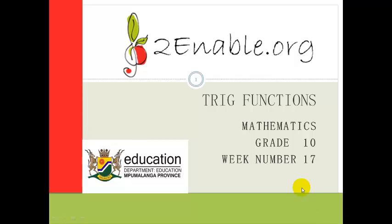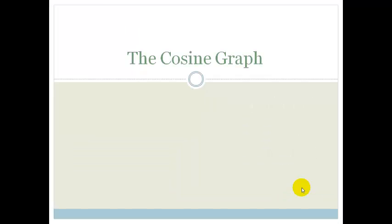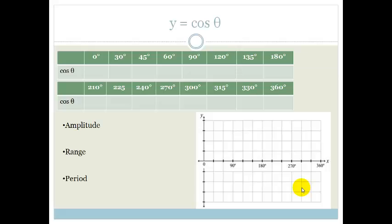Good day, Great Tens. Welcome to our second lesson in trig functions. Today's lesson, we're going to be looking at the cosine graph. We're going to do exactly the same as we did with the sine graph — we're going to be plotting points. I know, tedious, but it's the best way for you to get an idea of what this graph looks like. And then we'll talk about amplitude, range, and period all over again.